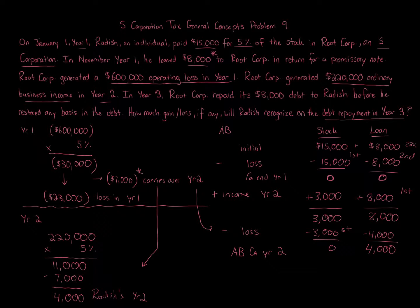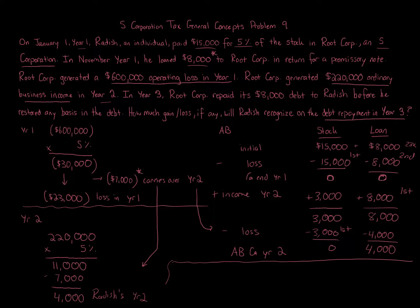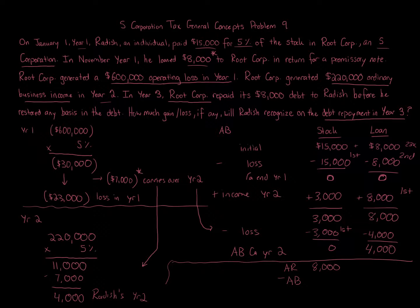Now we get to the last part of the question. We had to go through all of that because in Year 3, Root Corp repaid its $8,000 debt to Radish before he restored any basis in the debt. The repayment of the debt is treated as a sale or exchange event. Amount realized equals $8,000 minus adjusted basis of $4,000 equals a $4,000 gain.